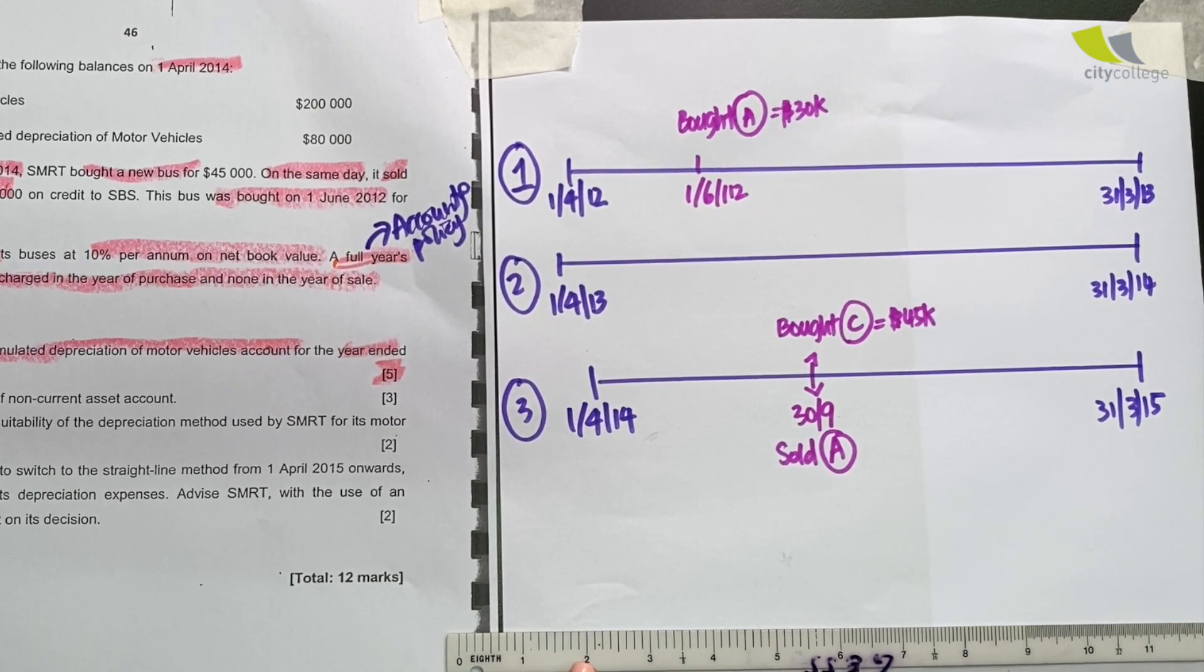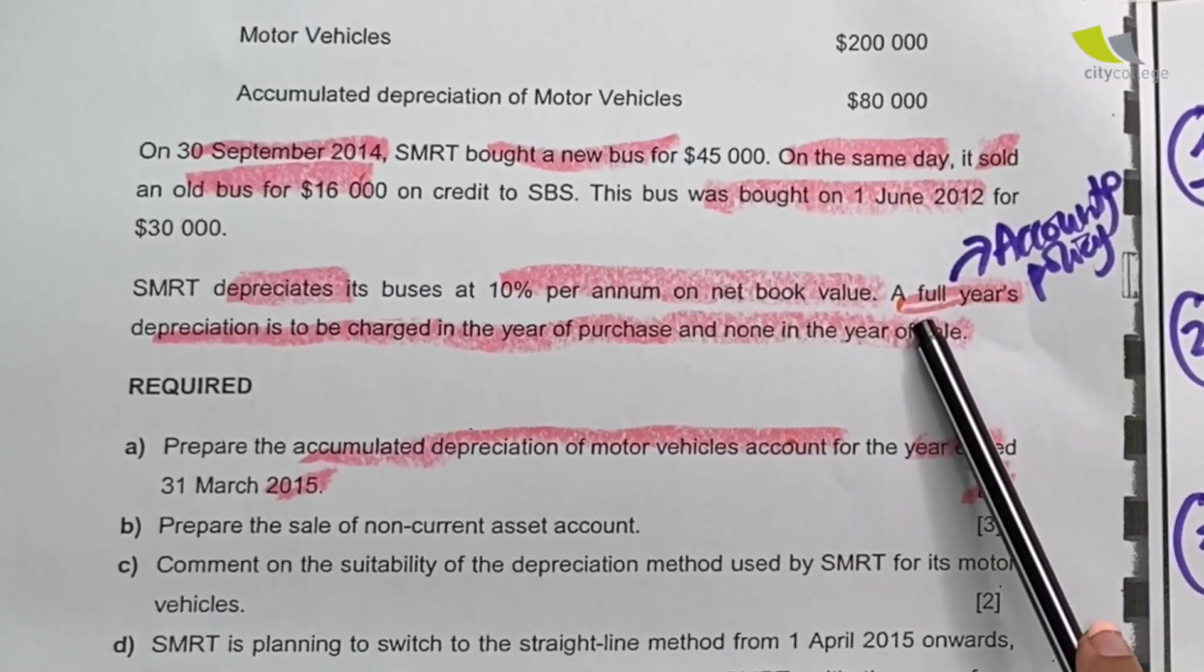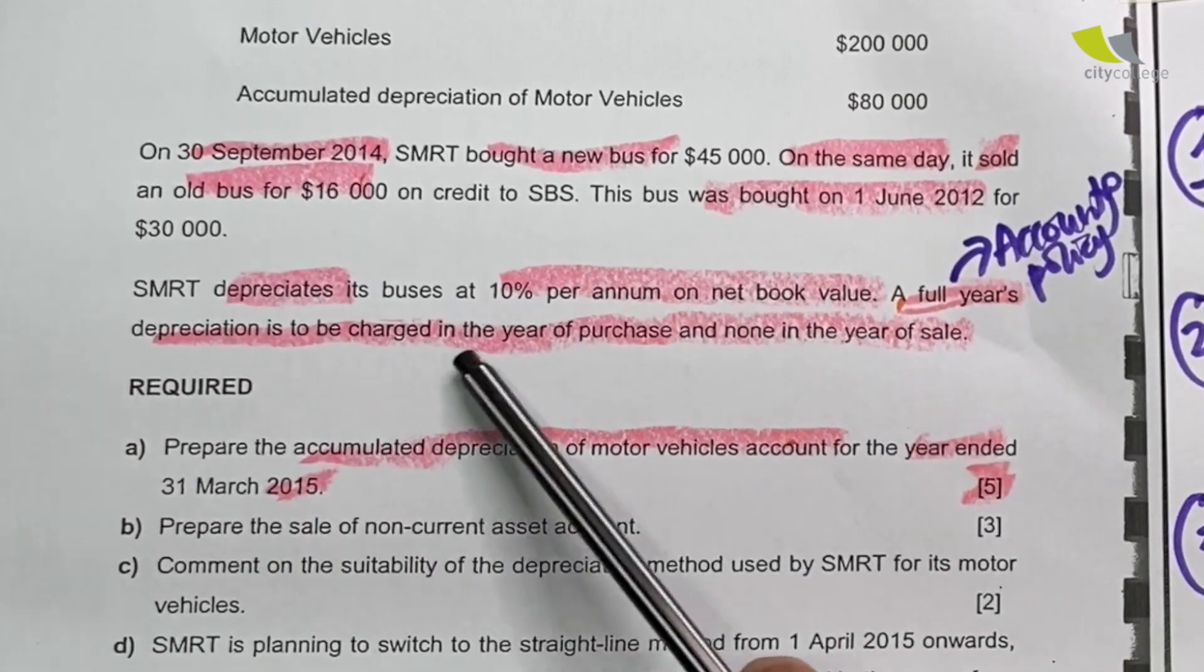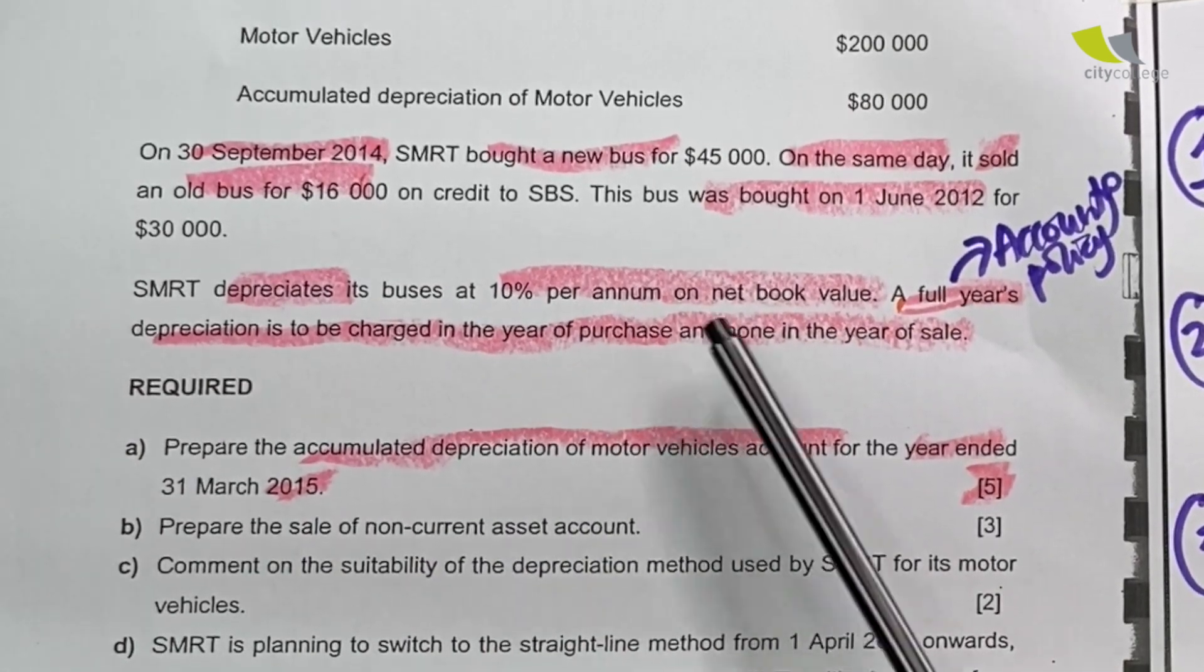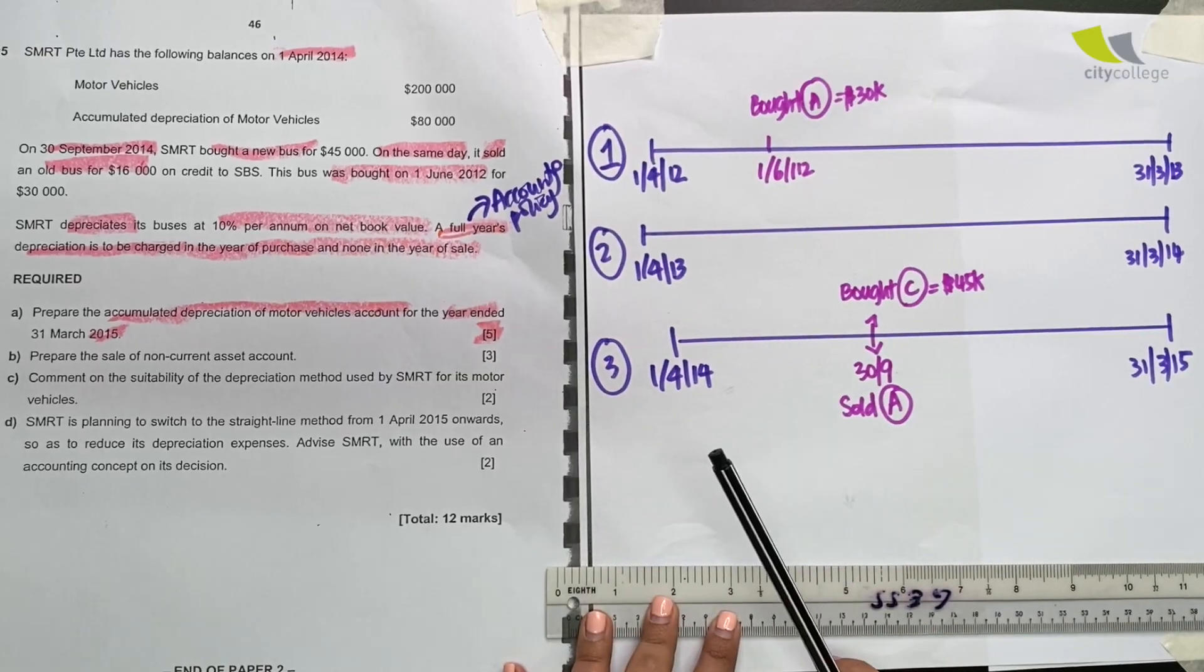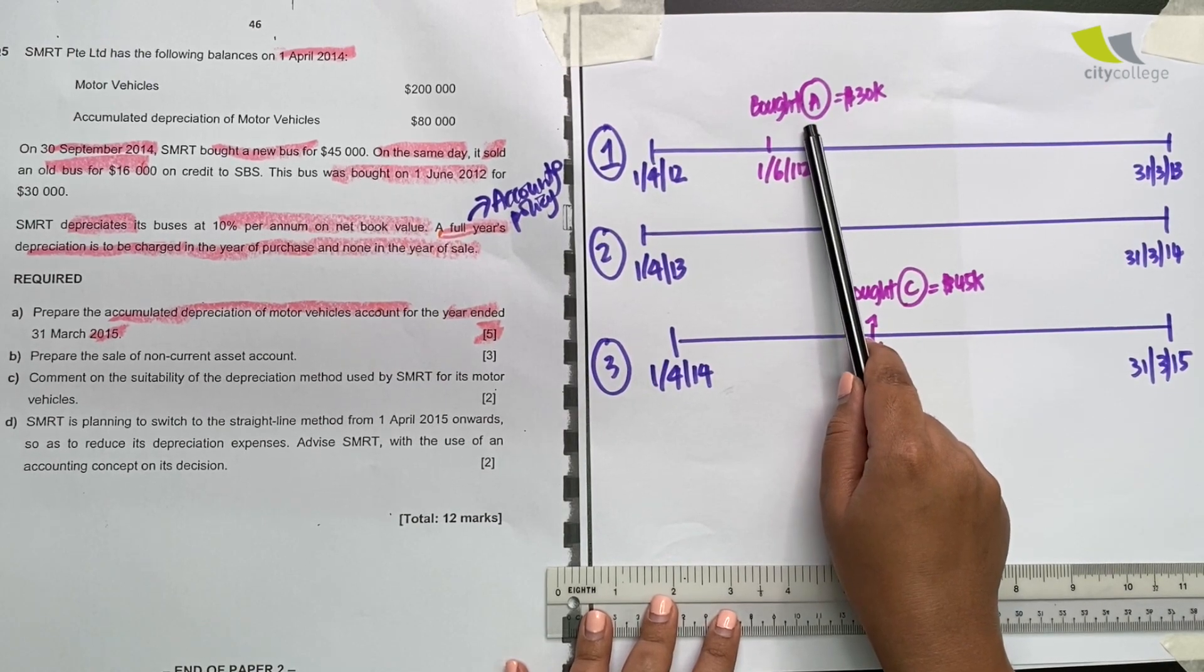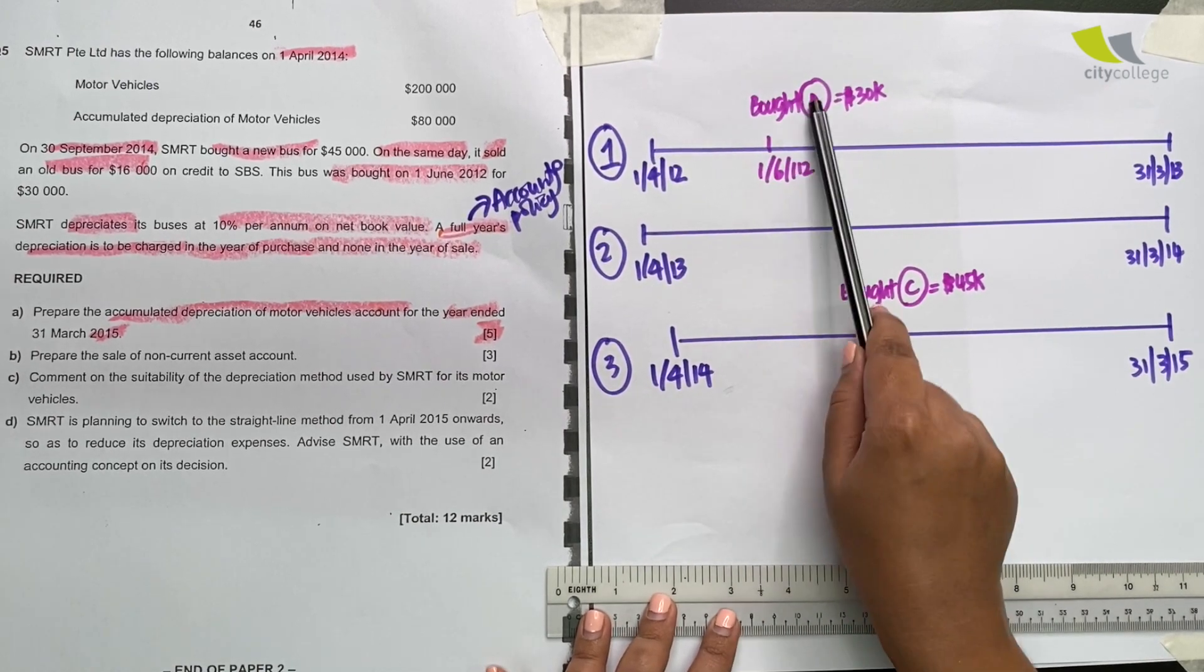And since this topic is about depreciation, it's important for us to know that. Next, we actually have to calculate depreciation right now. Let's read the accounting policy. It says a full year's depreciation is charged in the year of purchase and none in the year of sale. Which is the year of purchase? In year 1, I bought asset A. I bought. So A, for A, the year of purchase is year 1.